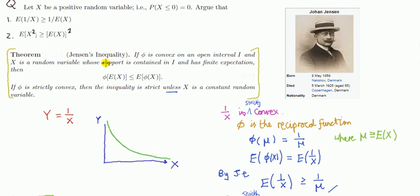Jensen applies to particular types of function. If the function φ is convex, I'll explain what that means later. If it's convex, then this holds.